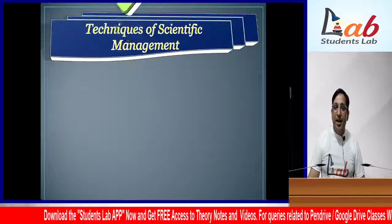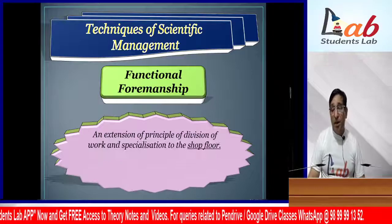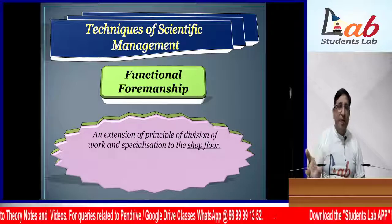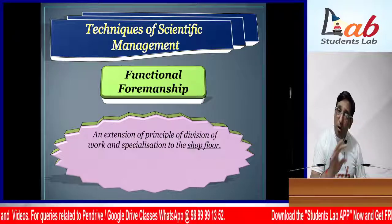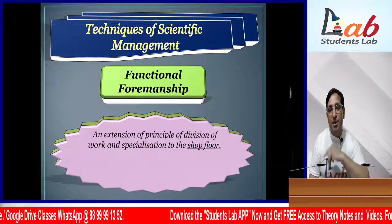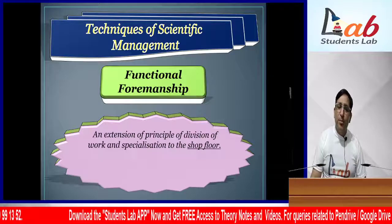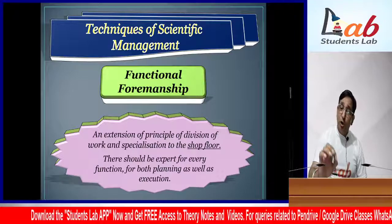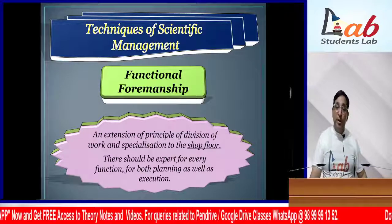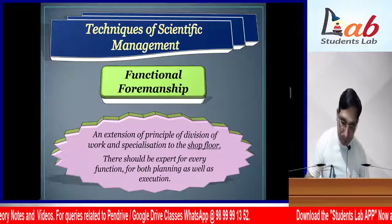Those were Taylor's 4 principles. He also gave some techniques. First was Functional Foremanship. Taylor believed one person cannot do all work - just as I can't teach physics or chemistry. So divide every function and make a foreman for every function - that concept was named Functional Foremanship. This is also called an extension of Division of Work because work is being divided here too. There should be an expert for every function, for both planning as well as execution.